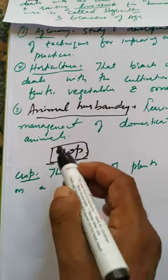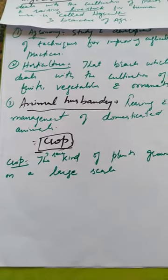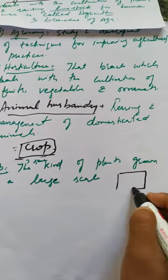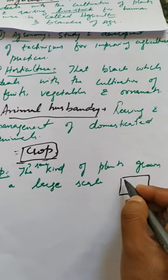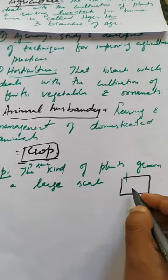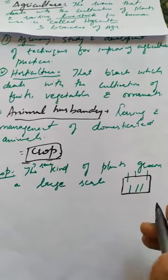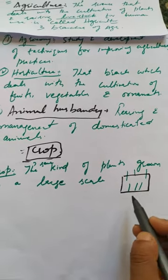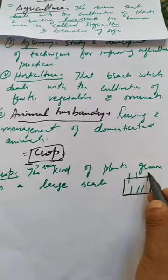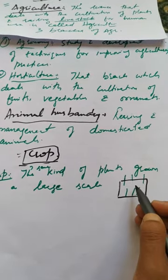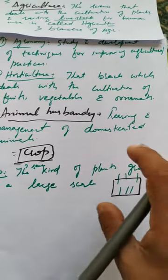The next topic is implementing food resources — that is, crop. What is a crop? The same kind of plants grown on a large scale is called a crop. For example, we have a piece of land and this piece of land contains some plants of rice, some plants of weed — different plants are present here. So when different types of plants are present — a few wheat plants, a few weed plants, some pulses, oil seeds, fruits, vegetables — we will not call this area a crop.